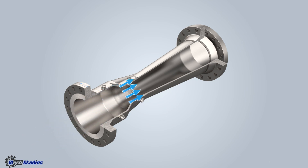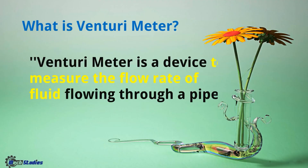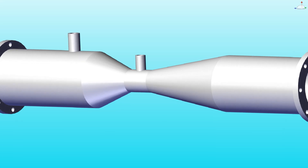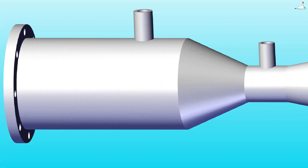The fluid velocity is different in different sections. We will talk about all the details here. A Venturimeter is a device to measure the flow rate of fluid flowing through a pipe — basically it measures the flow rate of liquid. Now let's look at the different parts of a Venturimeter.